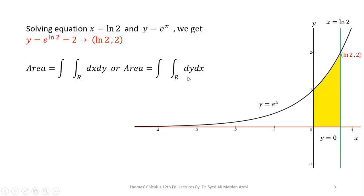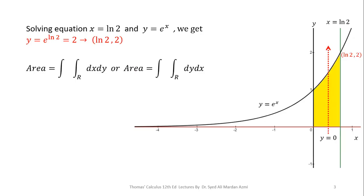For the area formula we have two possibilities: dx dy or dy dx. I have selected dy dx because if I select x as my inner variable, the limits change after the point where y = 1. So y is the best choice for the inner variable. Passing a vertical arrow through the region, it enters at y = 0 and exits at y = e^x, so the inner limits are 0 to e^x.